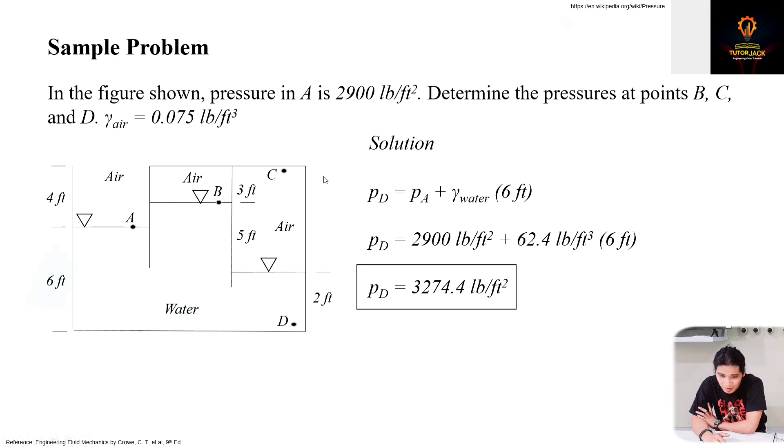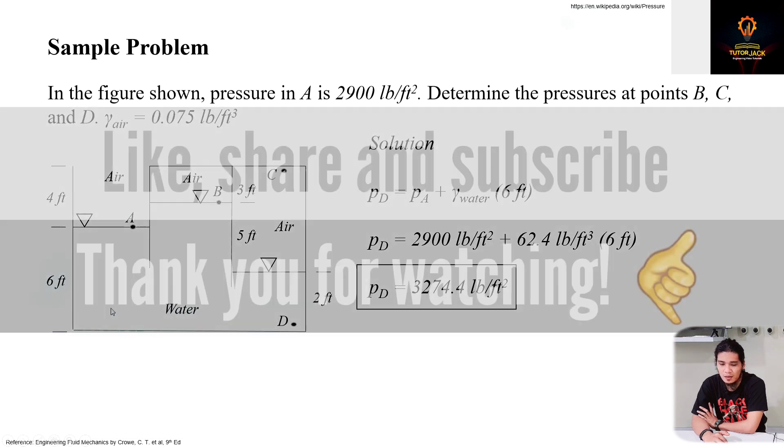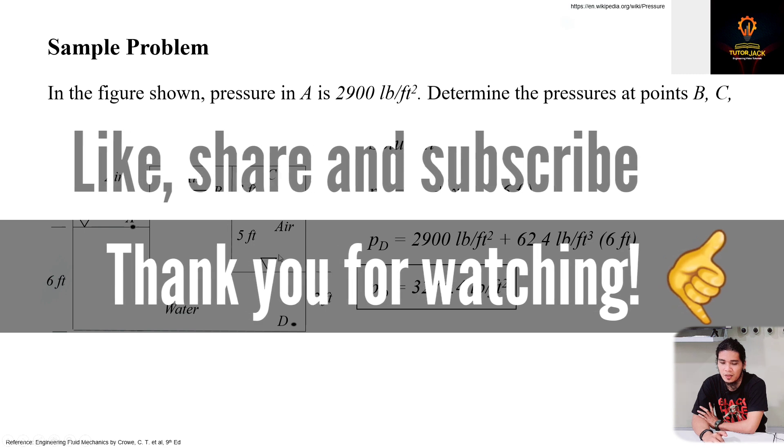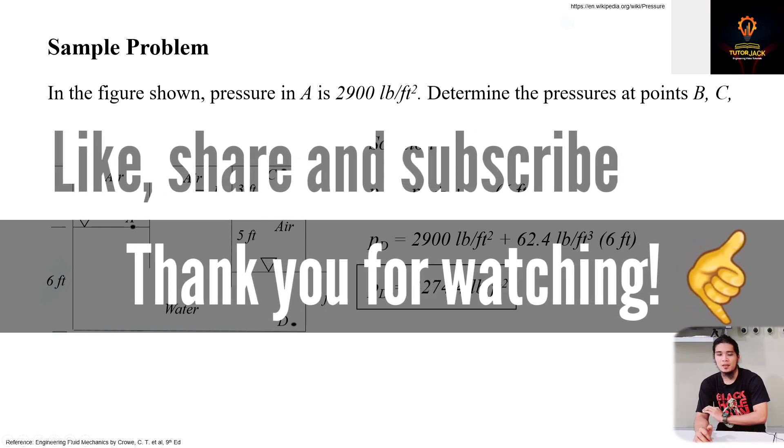So again, you might be wondering why our points are just here and here. So there's only a small difference. Anyway, we're near the bottom and near the top of point C and point D. So approximately, 6 feet is point D, and approximately, 8 is here at point C.